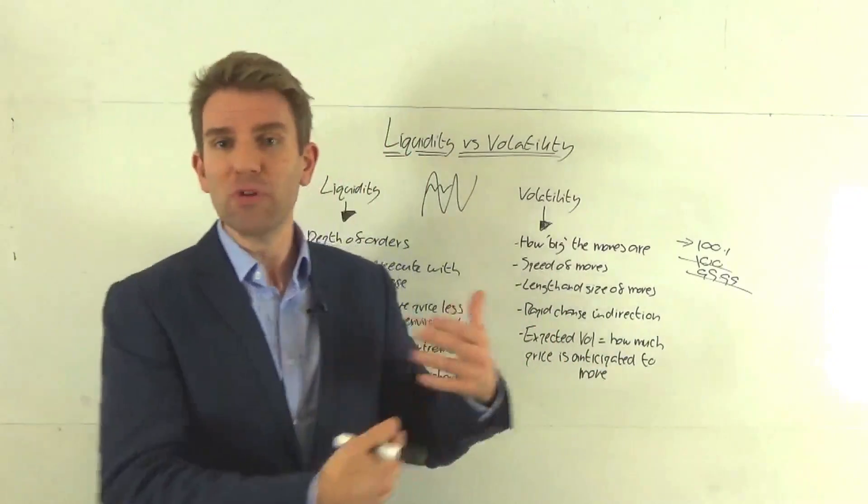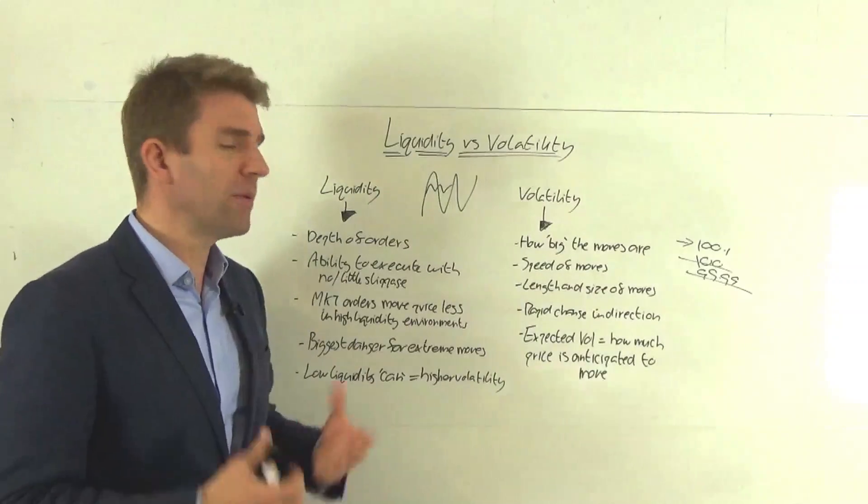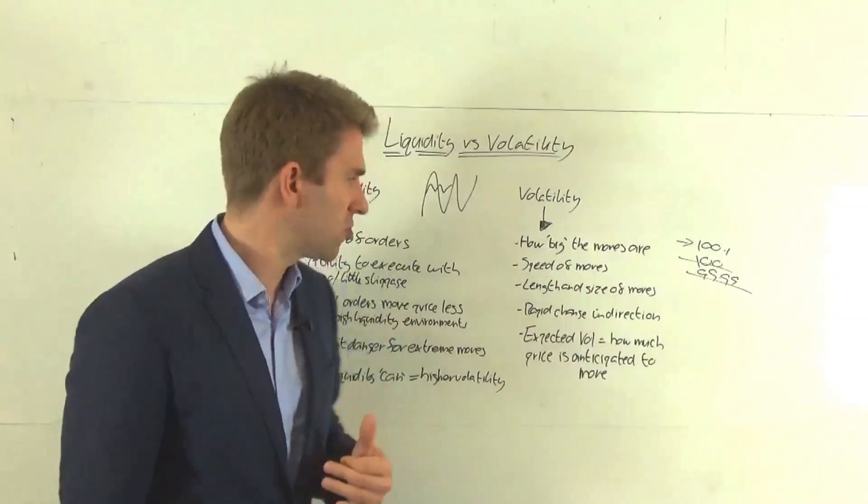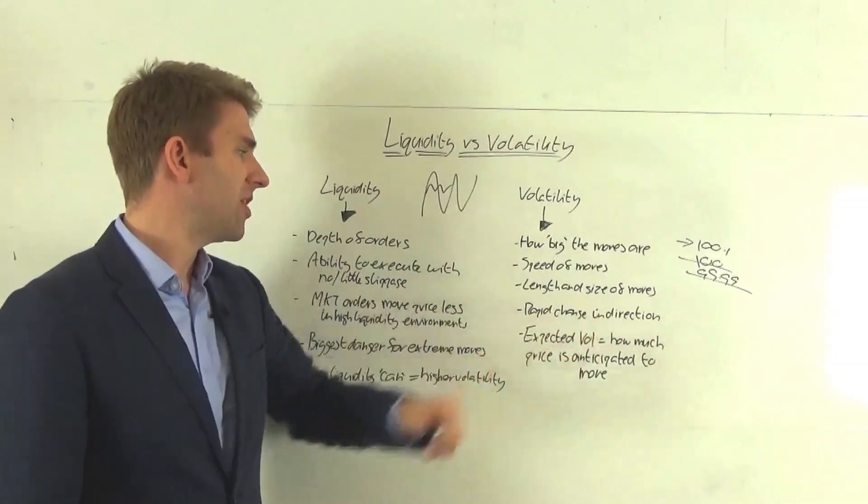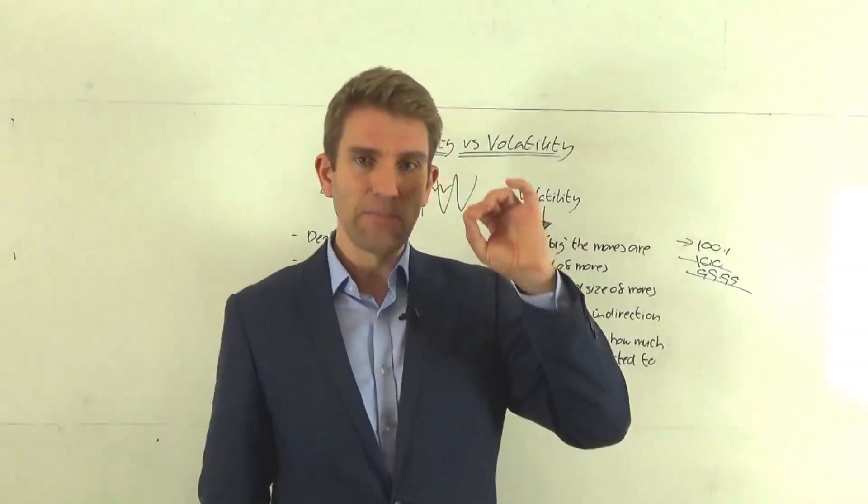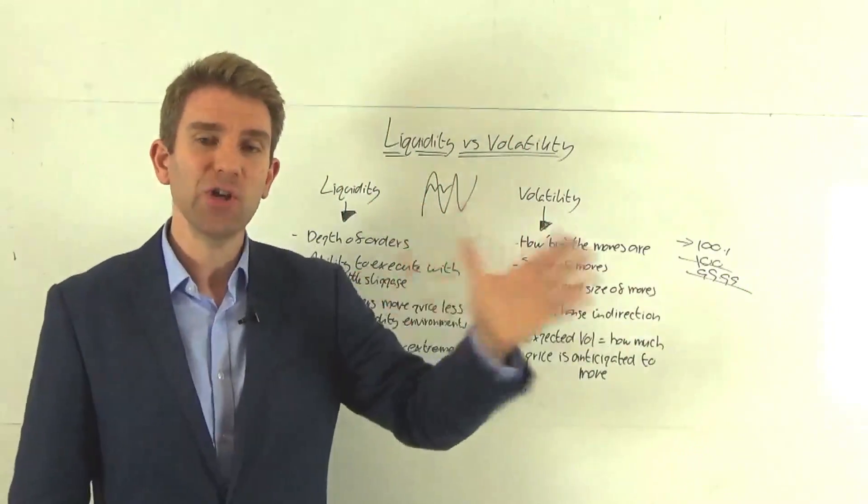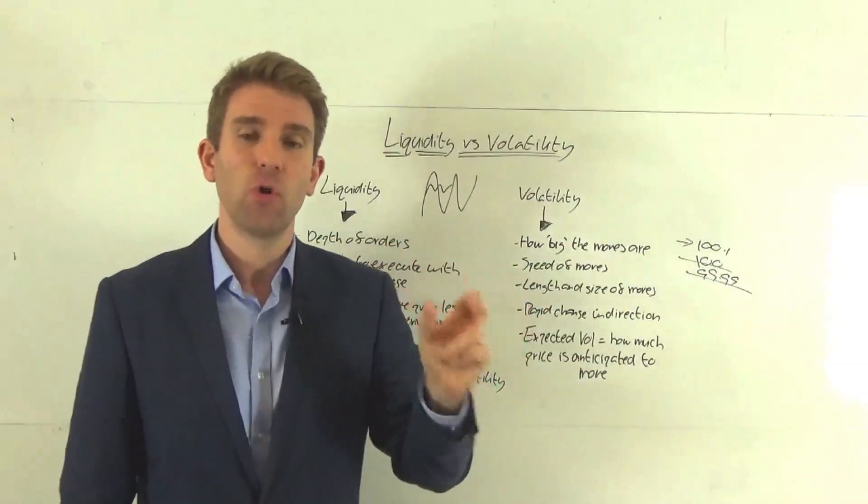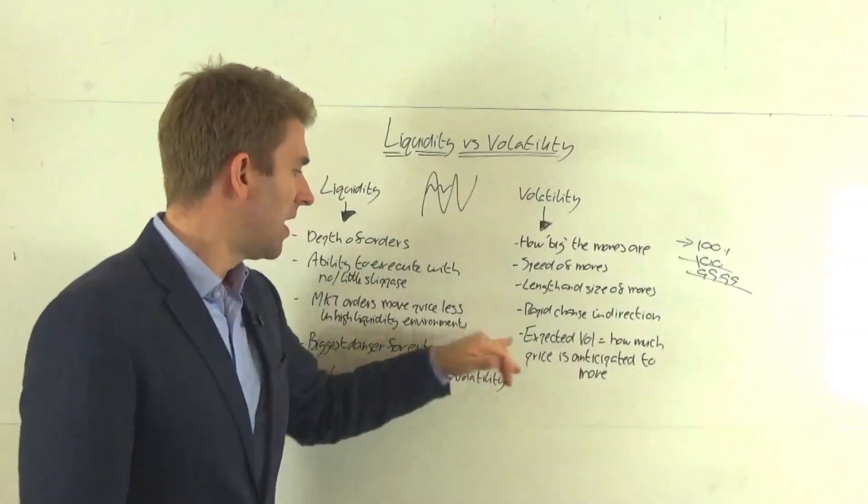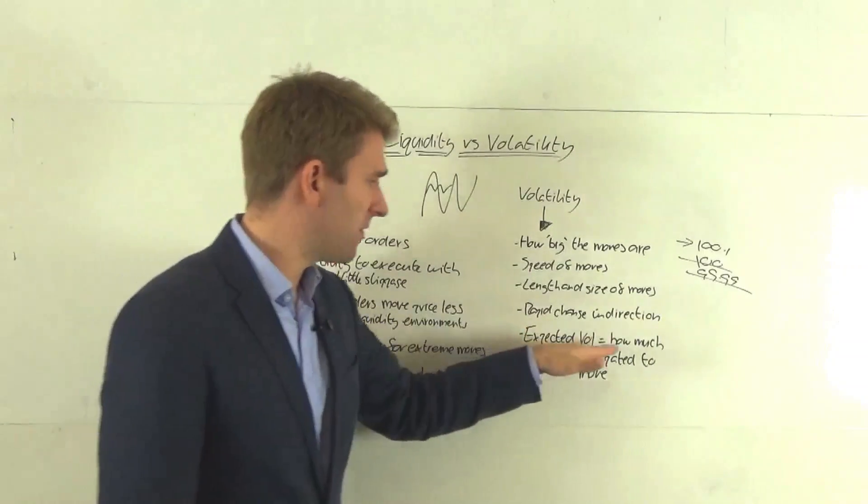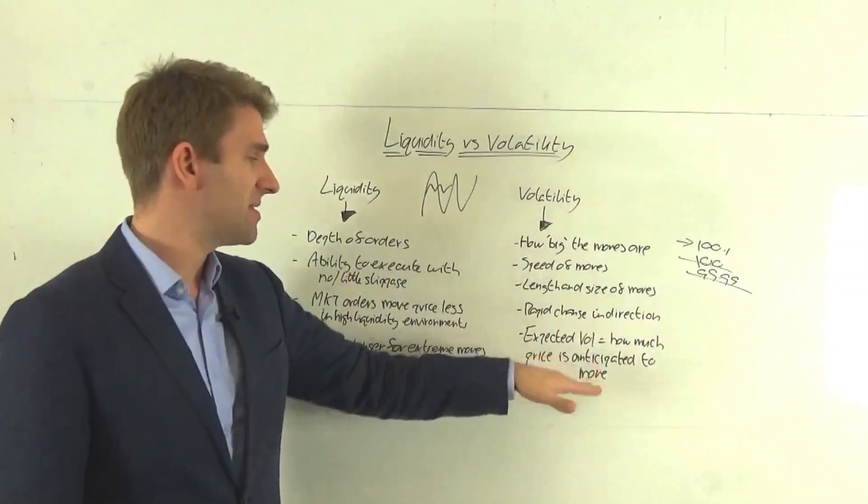So it's all about benchmarking it against previous kind of moves as well. But we can also compare volatility with different instruments. So we're going to have rapid change in direction. And for me, if a price is changing direction quickly, sharply, and in a short amount of time, that is volatile.